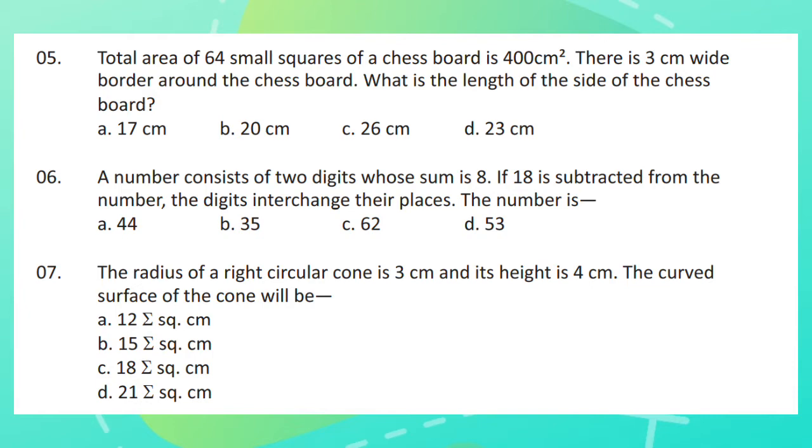Question 6. A number consists of 2 digits whose sum is 8. If 18 is subtracted from the number the digits interchange their places. The number is?